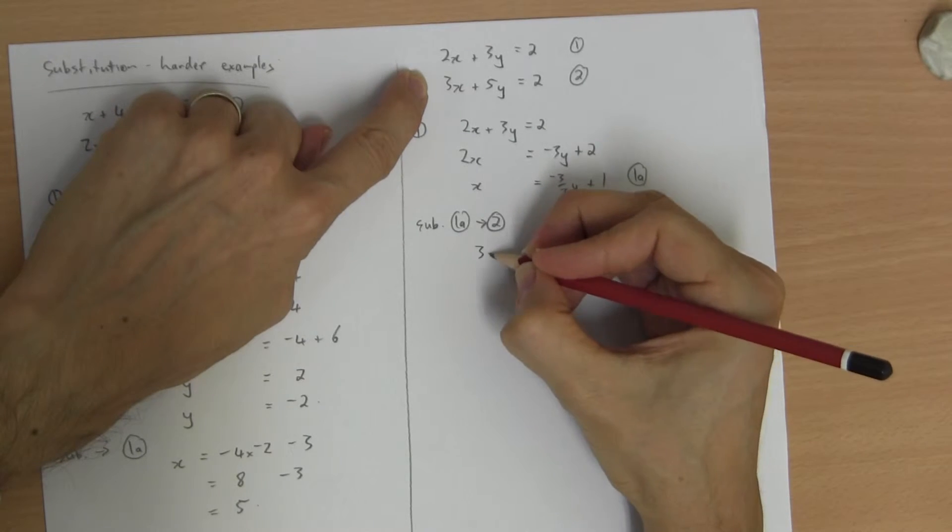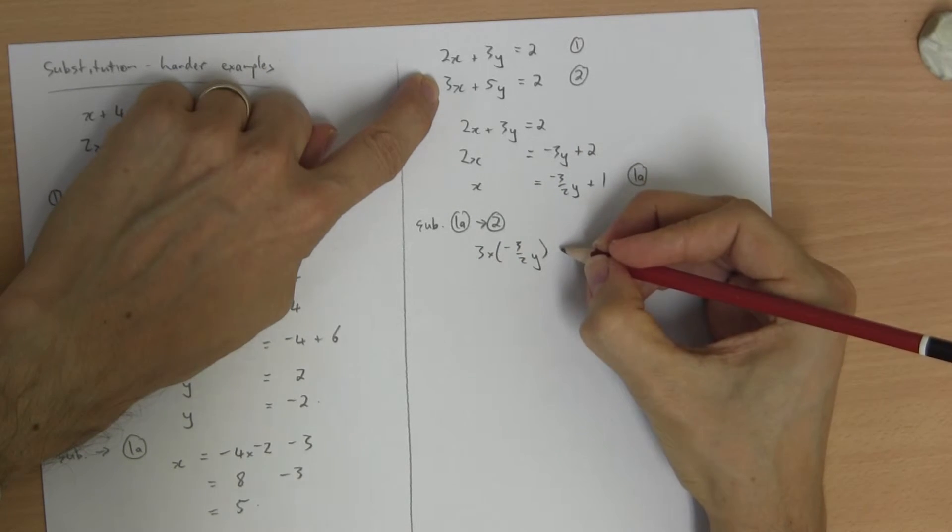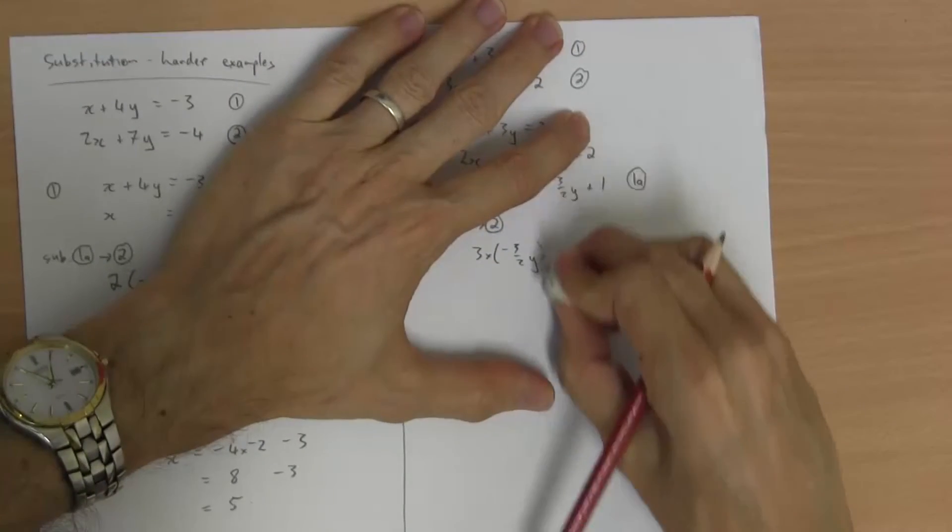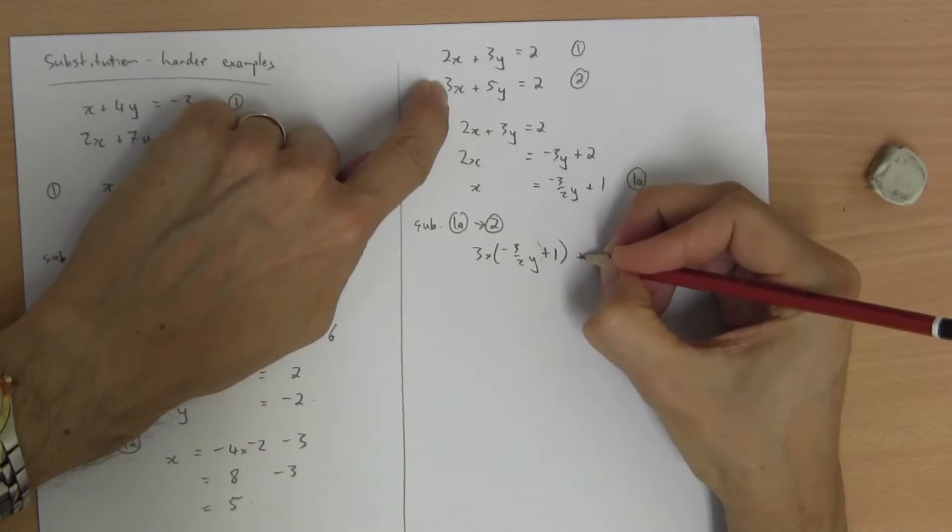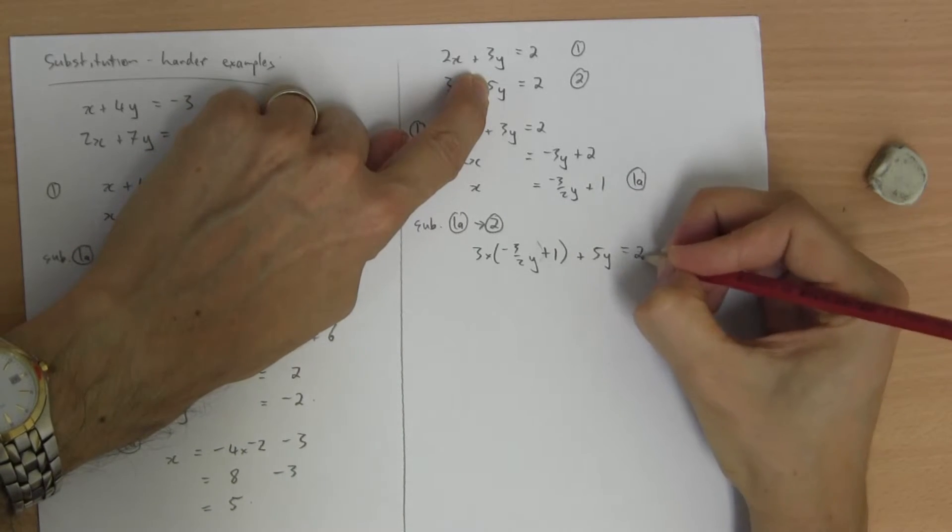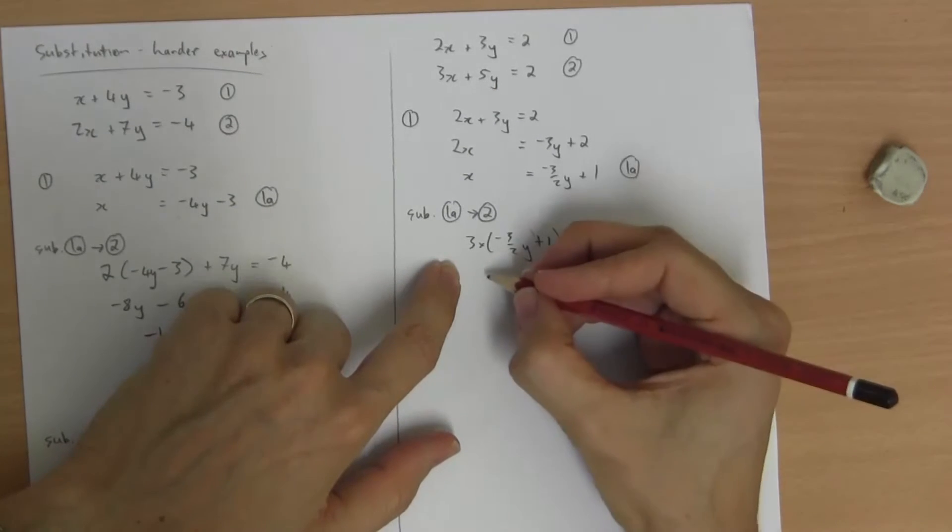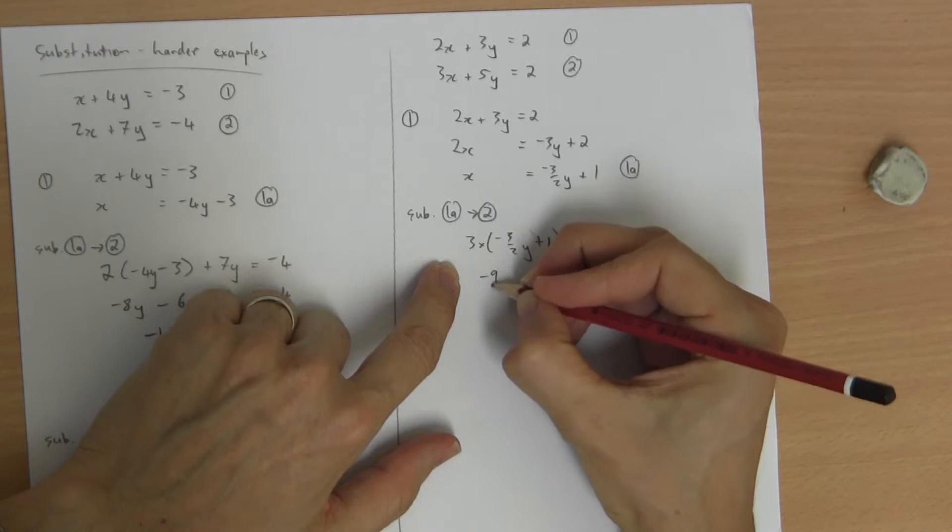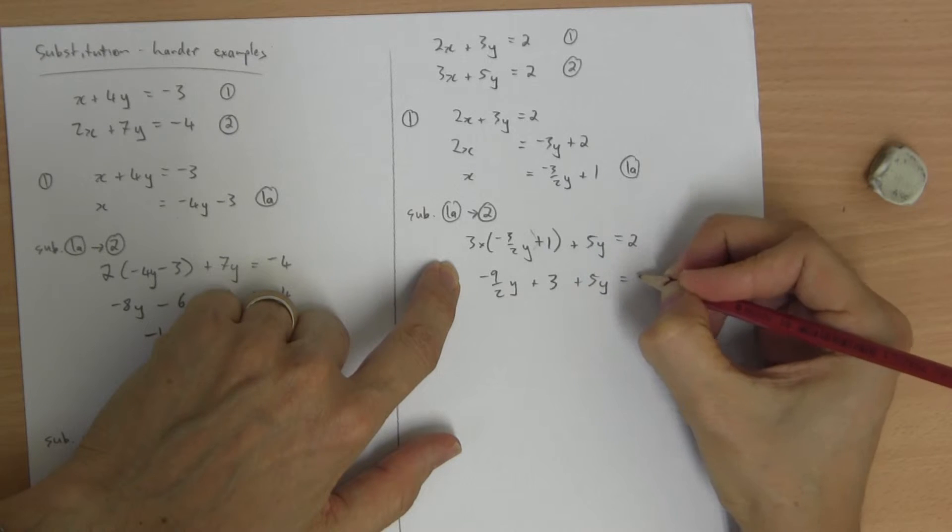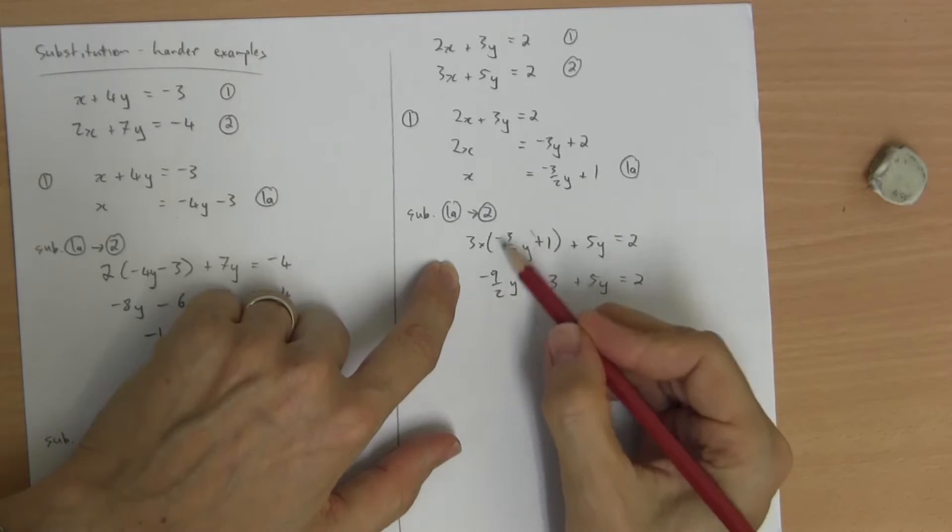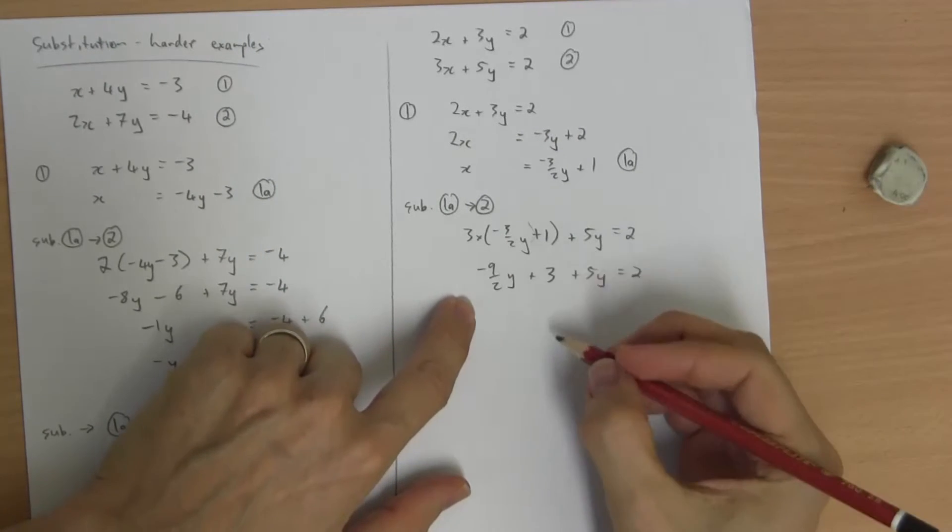3 times x, negative 3 on 2y, not finished yet, plus 1, 3x, plus 5y equals 2. All right. Expand the brackets. Negative 9 onto y plus 3 plus 5y equals 2. See, if you're not comfortable with fractions, I think you'll find elimination easy. Let's keep going, though.